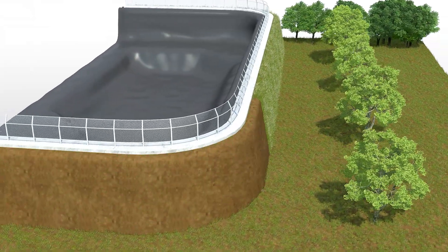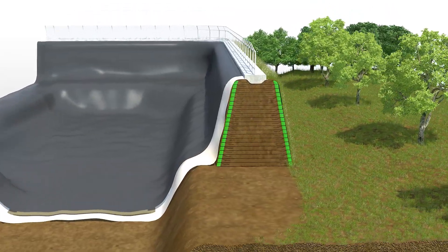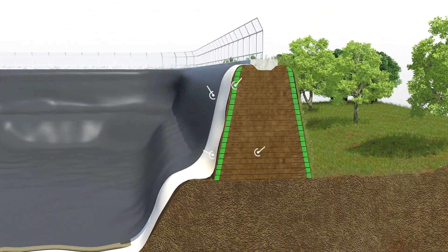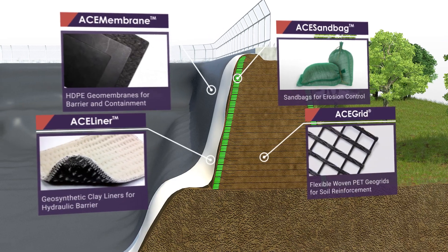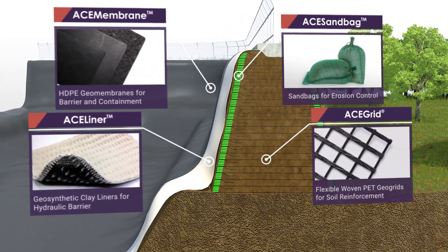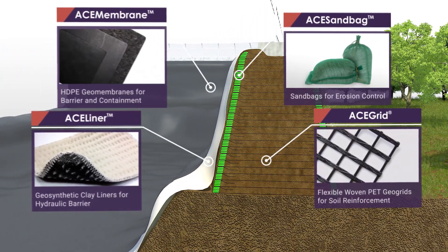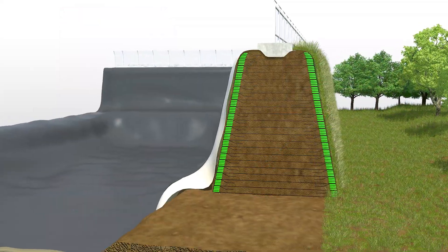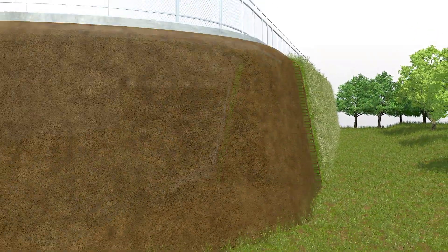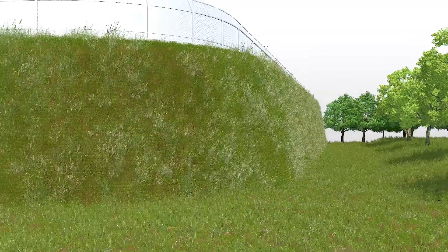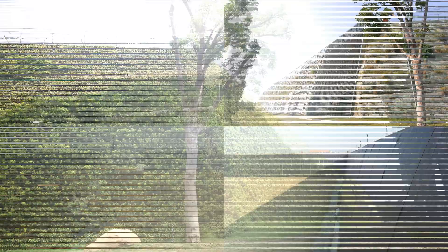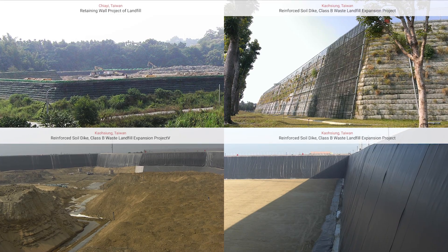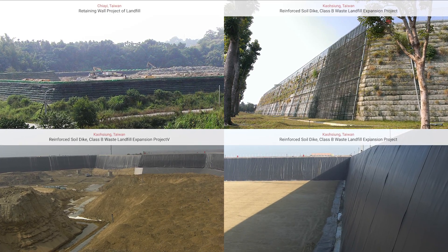Landfills: ACE grid geogrid can be used in landfills to increase the strength and stiffness of the embankment. Laying ACE membrane inside the embankment will isolate the waste material and avoid groundwater contamination. The reinforced embankment could be built with in-situ soil and is able to economically increase the storage capacity. Moreover, it can also be planted with vegetation outside to improve the visual appearance of the site.